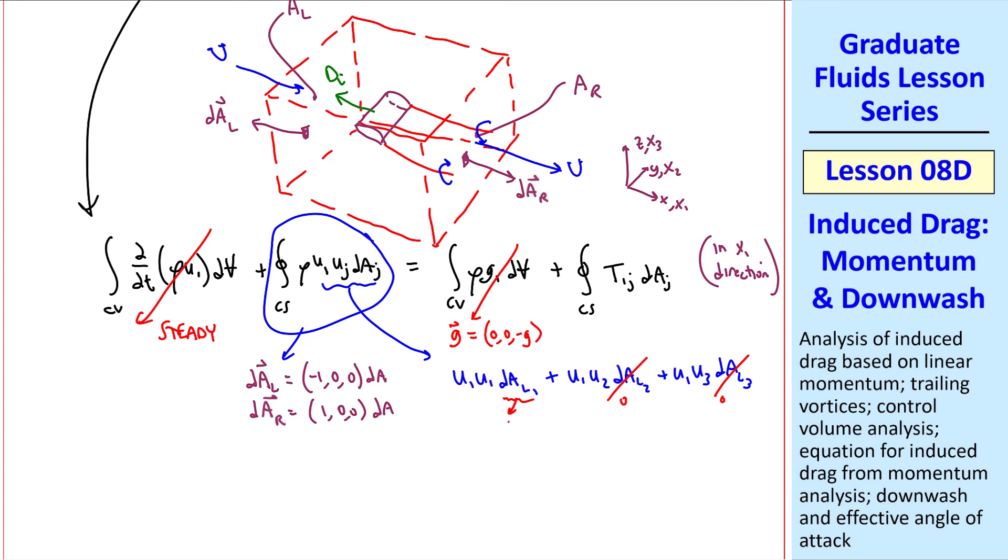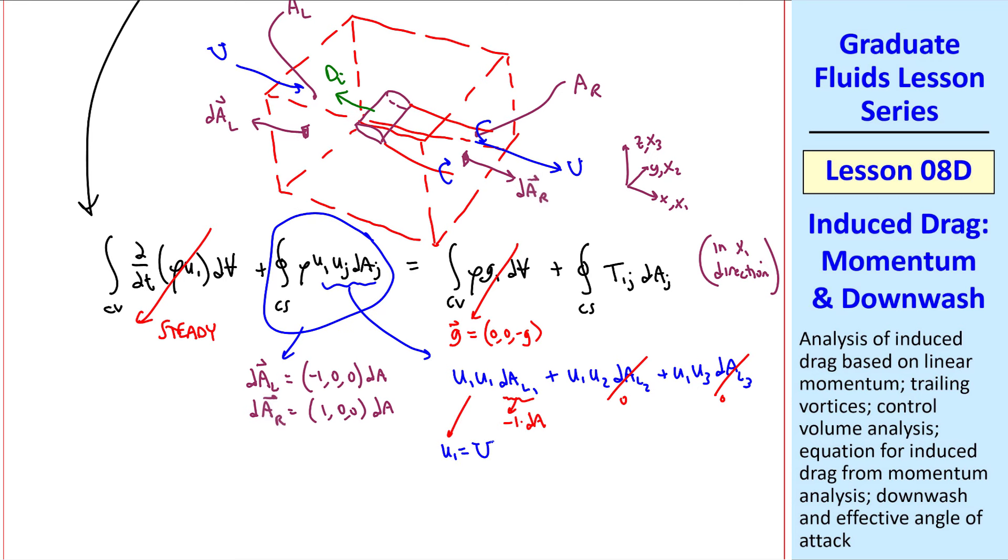On the left side, dal1 is negative 1, as we see here, times da. And u1 is simply equal to capital U. So this term on the left face, when we integrate over the whole area, al, we get negative rho, capital U squared, and the integration just gives us the actual area, al. On the right face, we get the same thing, except positive, and area ar, which is equal to area al, because the only thing that changes is this negative sign. And we're assuming that the speed in the X direction is capital U everywhere on this face. There's an additional swirl component, but it doesn't affect the X1 component of velocity. These two cancel each other out, since the two areas are equal. So this whole term is also 0.